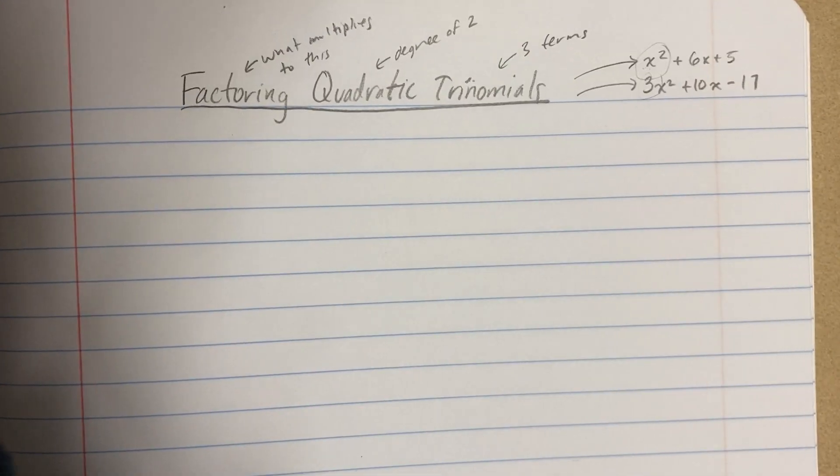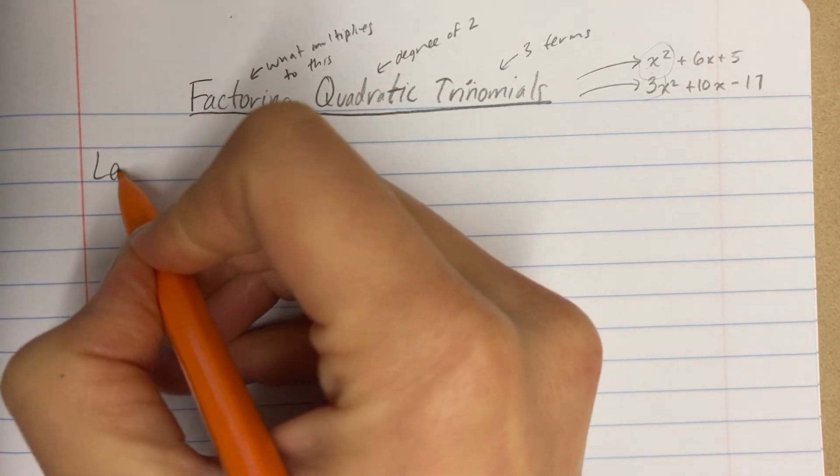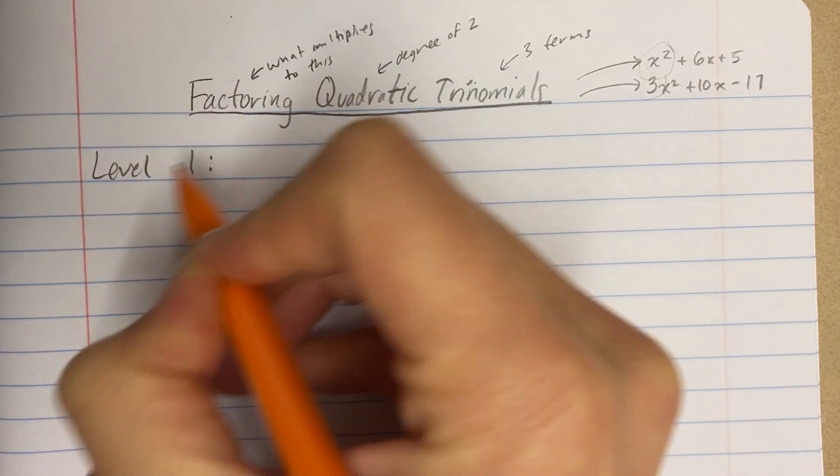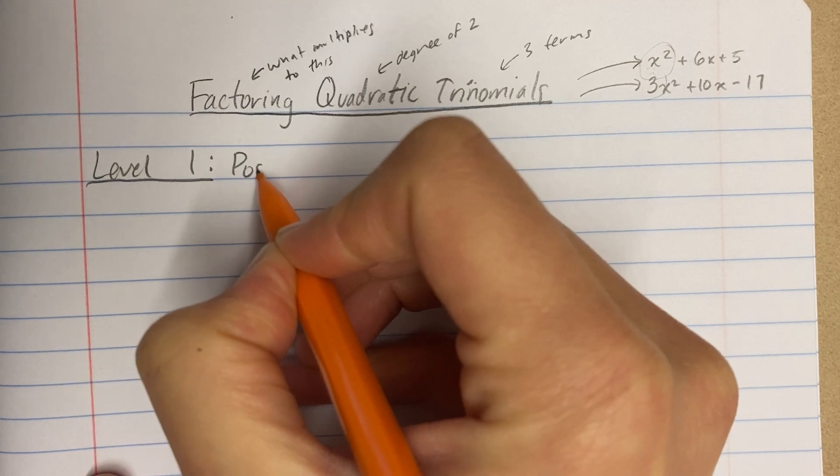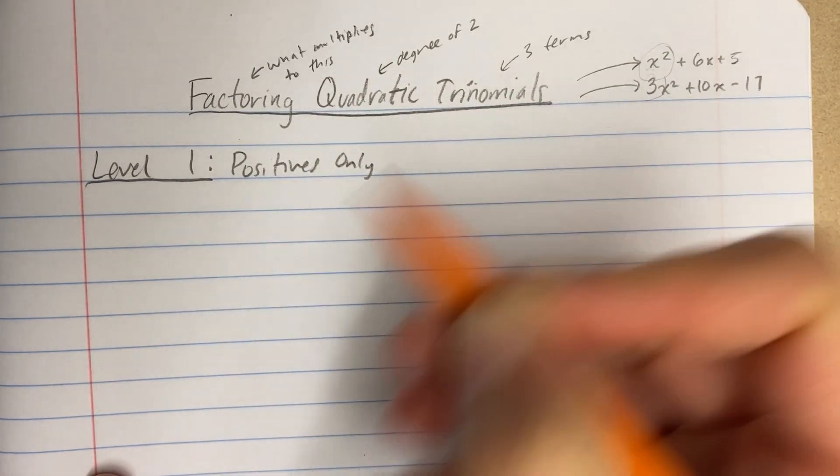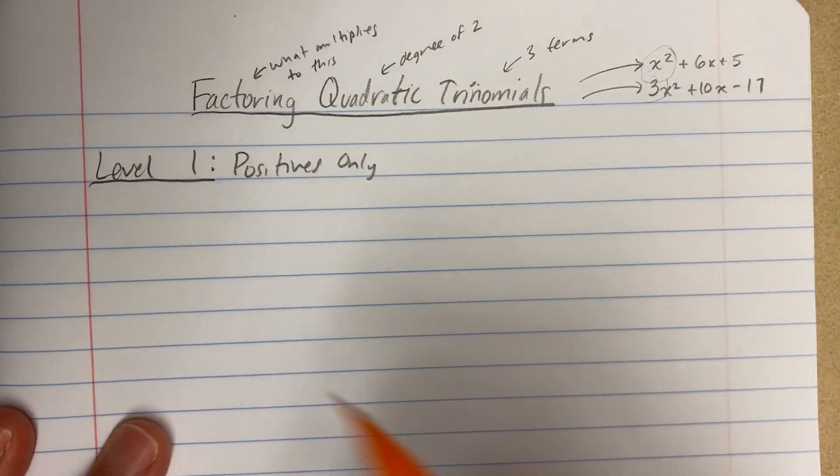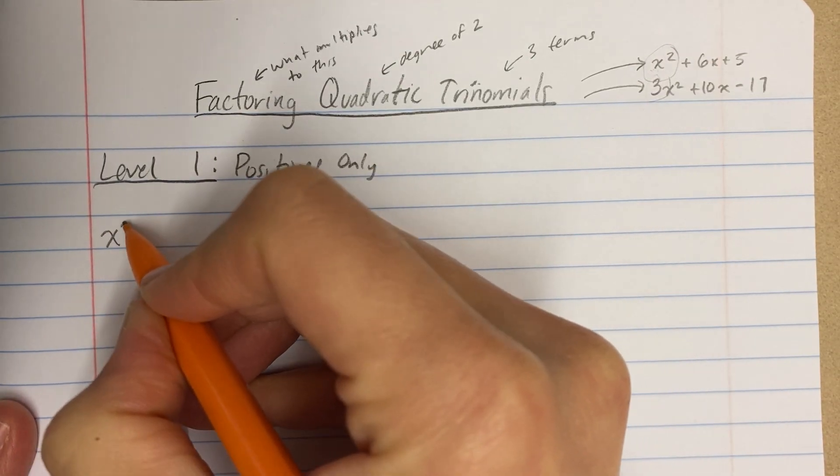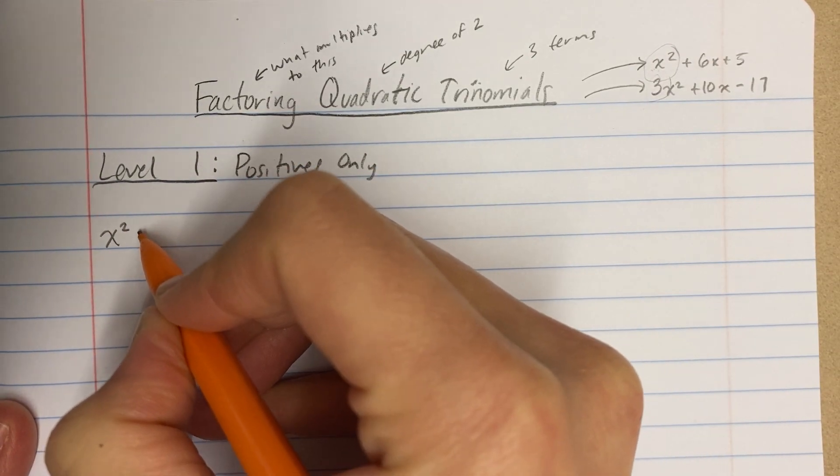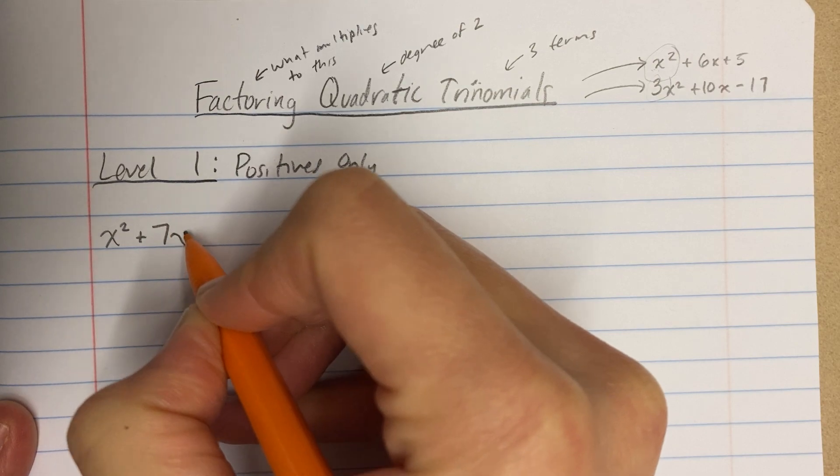So this first one is called level 1. And the reason that it's level 1 is because it's positives only. But the rules stay the same. So the rules don't change on level 2 and 3 or 4 or any time, but it's just nice to kind of address things one piece at a time.